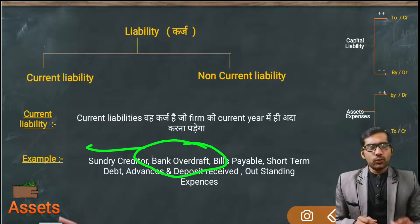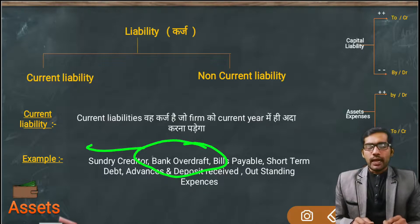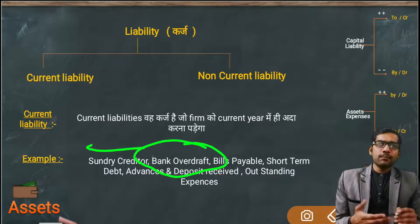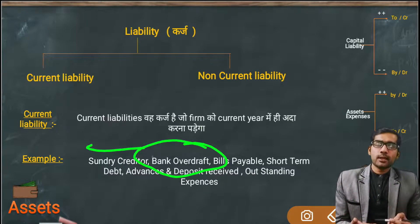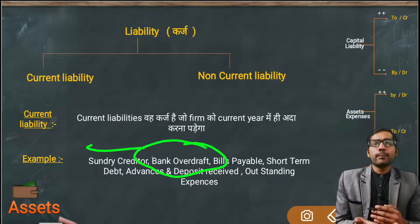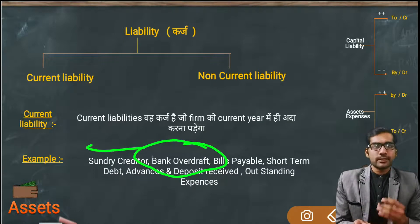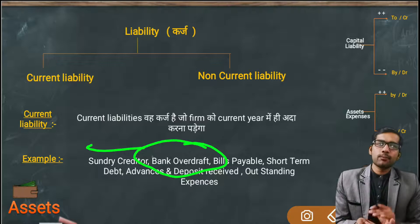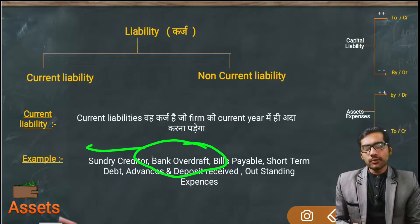Bank Overdraft also falls under current liability. Next is Bills Payable — if you have a bill for which payment must be made in the current year, those are called Bills Payable. All such bills you have are current liabilities; you have to clear those bills. Next is Short Term Loan — short term debt or short term loan means you have borrowed money from someone for a short period of time.